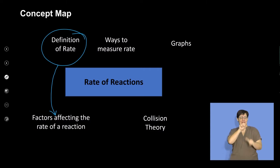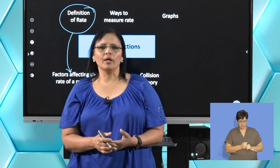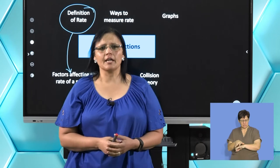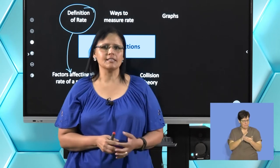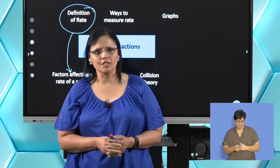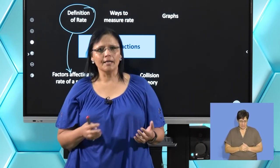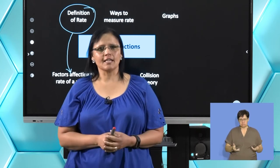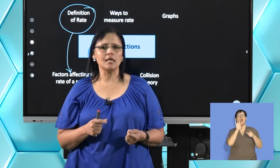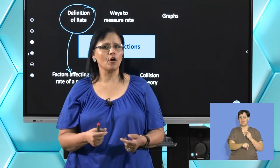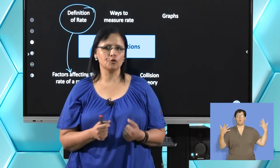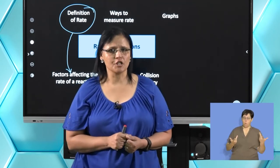When we look at rate, we think in terms of how some reactions take longer and some are very short. By looking at the factors at a later stage, we will be able to see how we can alter a reaction to make it faster or to make the reaction slower.